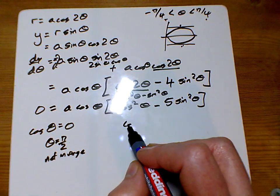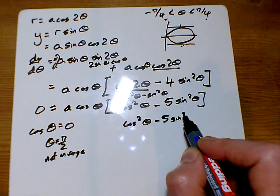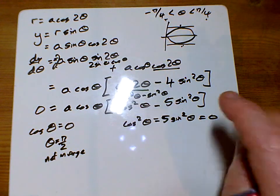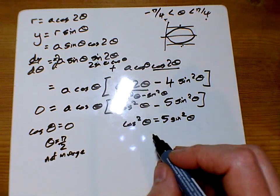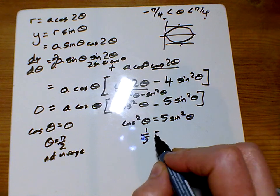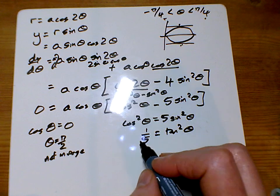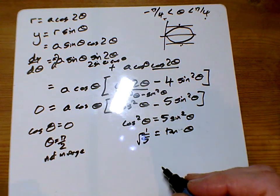So otherwise, then we've got this part here is equal to 0. OK, so add this to both sides. We've got that. Divide both sides by cos θ. And then I'm getting tan² θ equals a fifth. So that will give me tan θ is root 5.